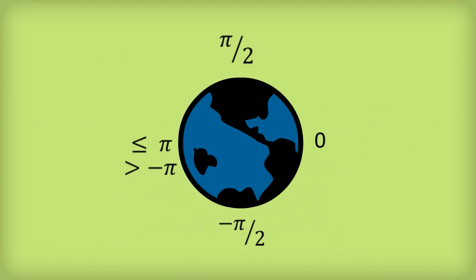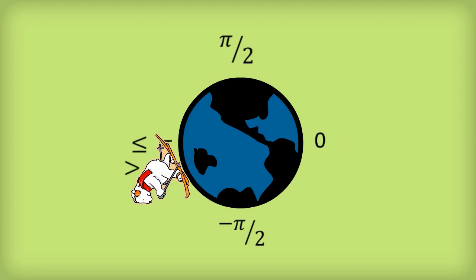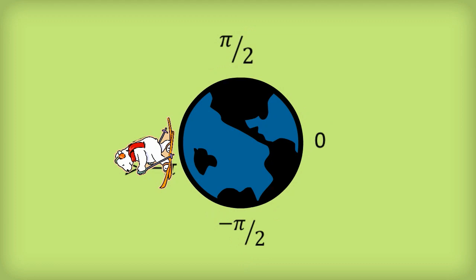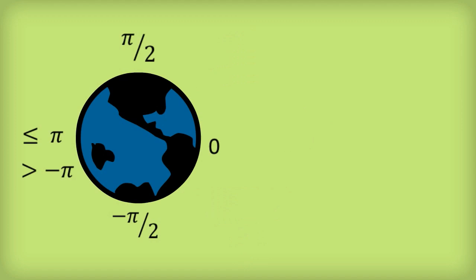Invariably, your examiner will expect you to pick the angles centred around 0 — the principal argument. Think of the polar bear starting just past negative pi, going through negative pi on 2, through 0, through pi on 2, and ending at pi, including pi. That way we've got every angle we could possibly need with no duplication. You'll sometimes see the statement that the argument of W, using a capital A, is in the interval negative pi to pi. The curved bracket means we don't include negative pi; the square bracket means we do include pi.